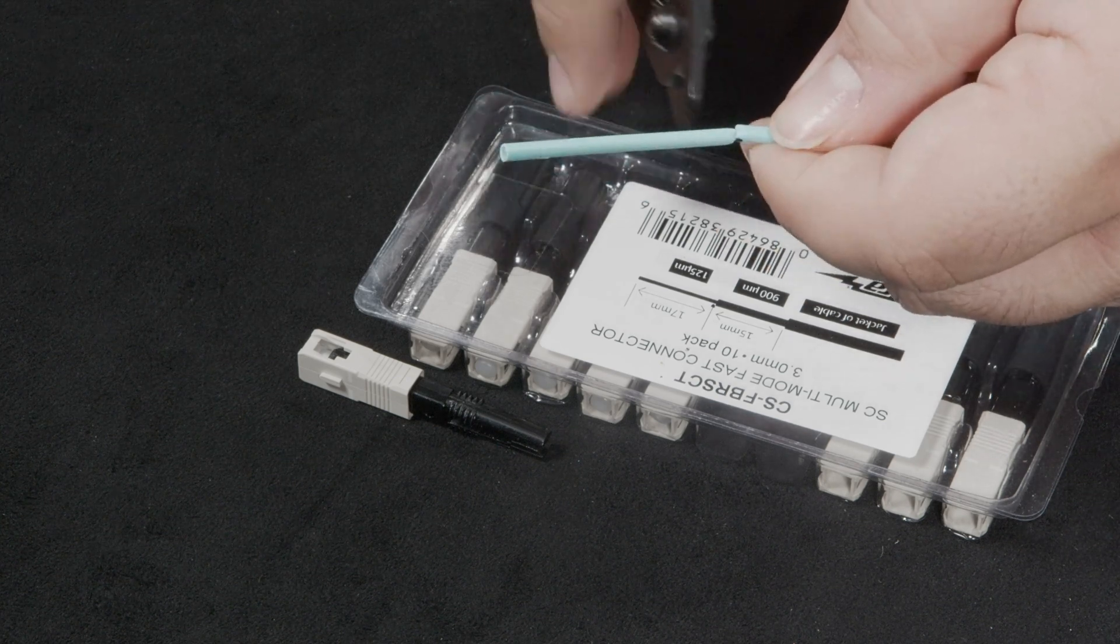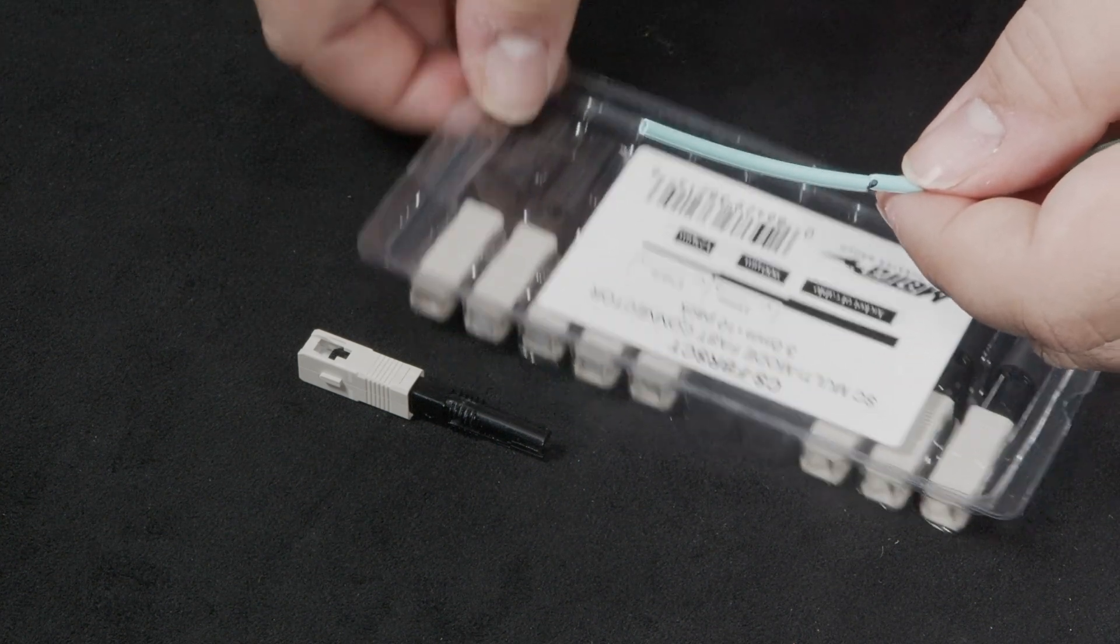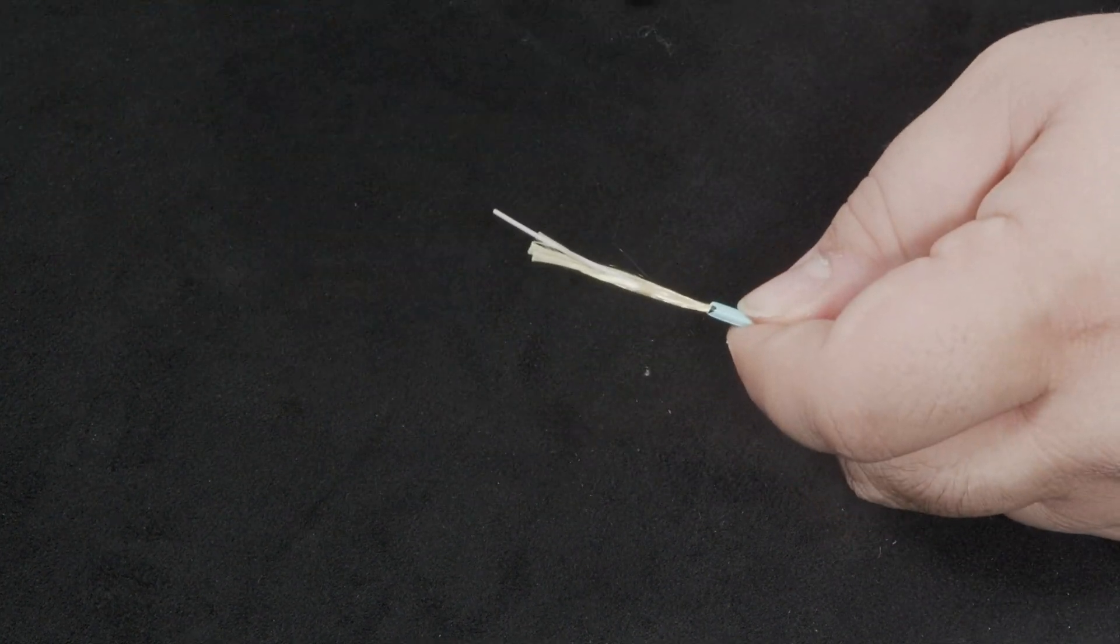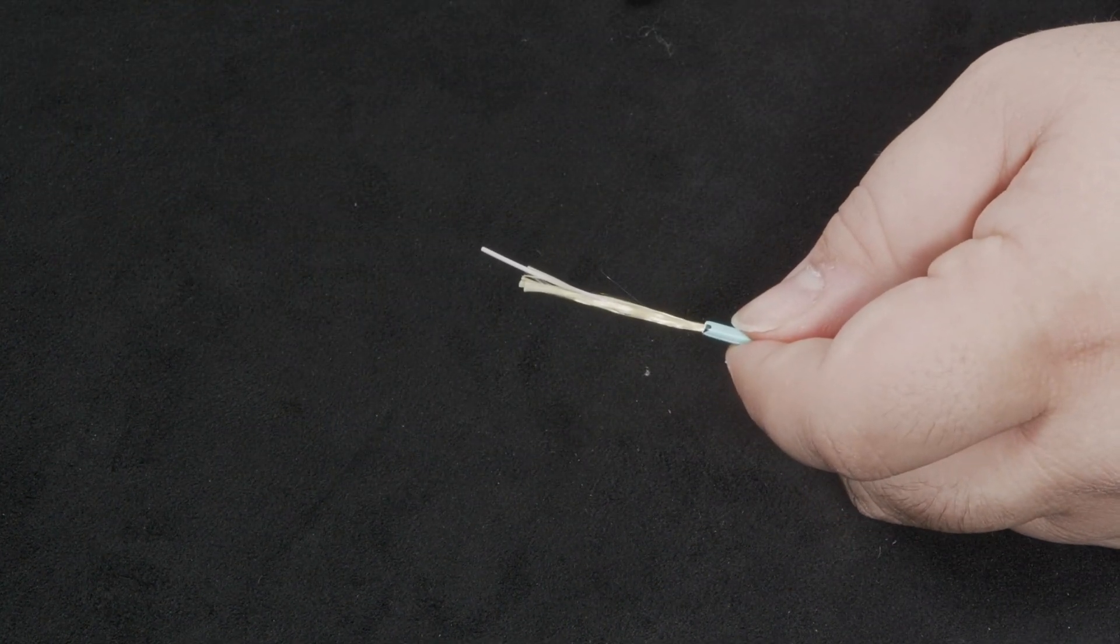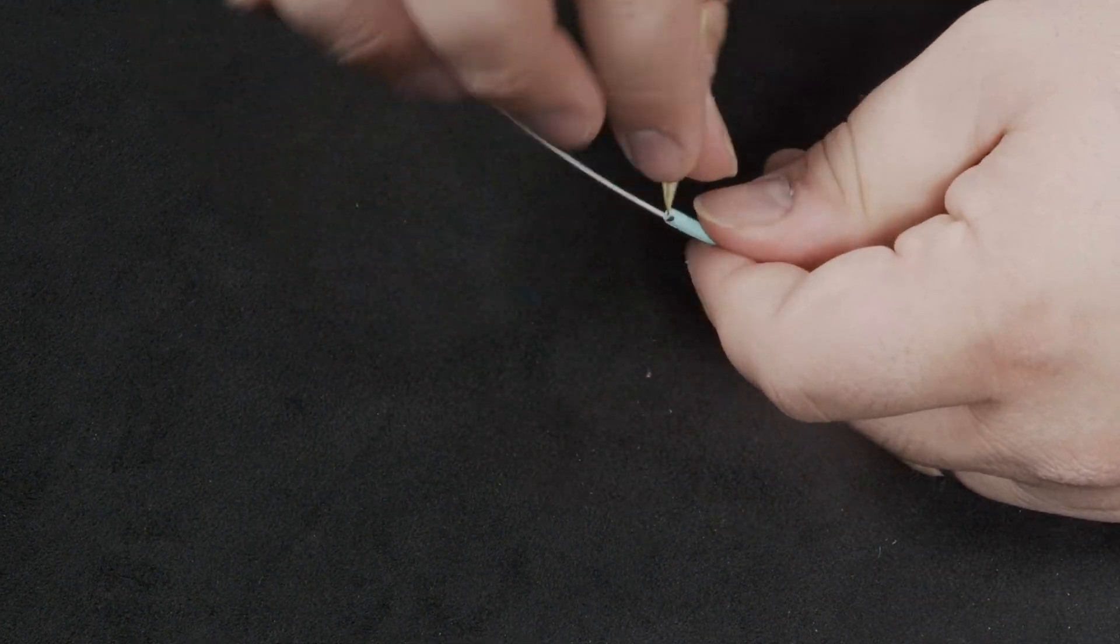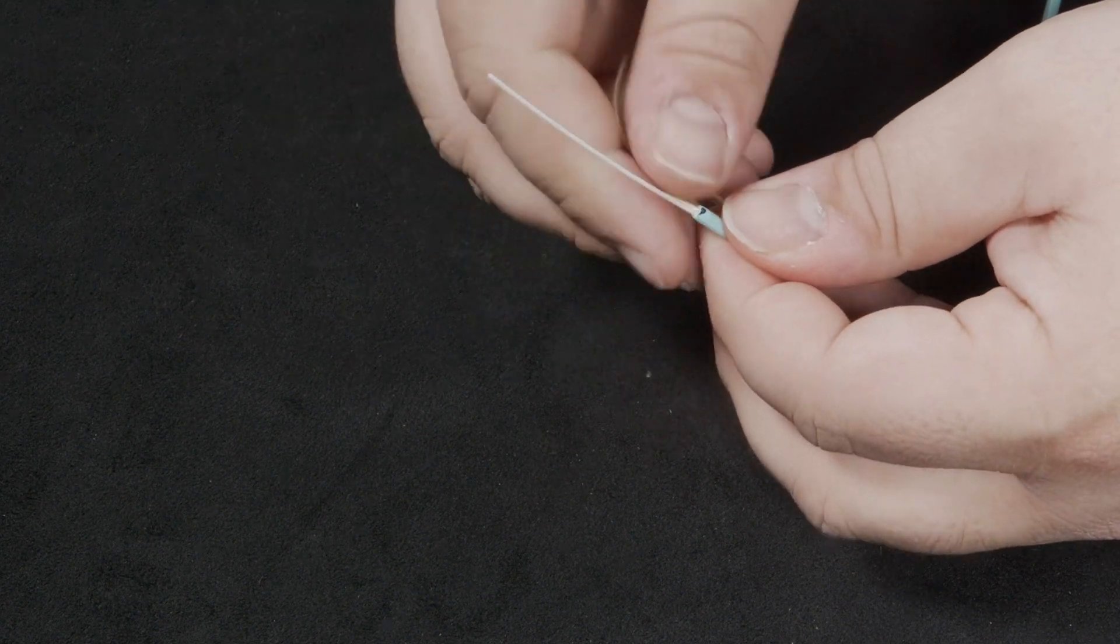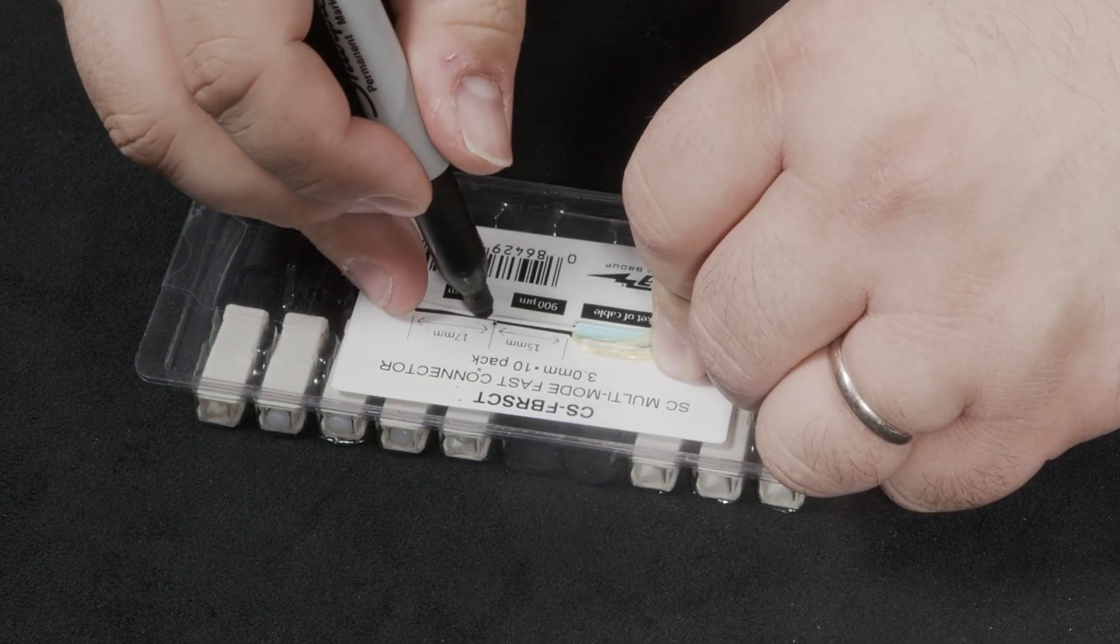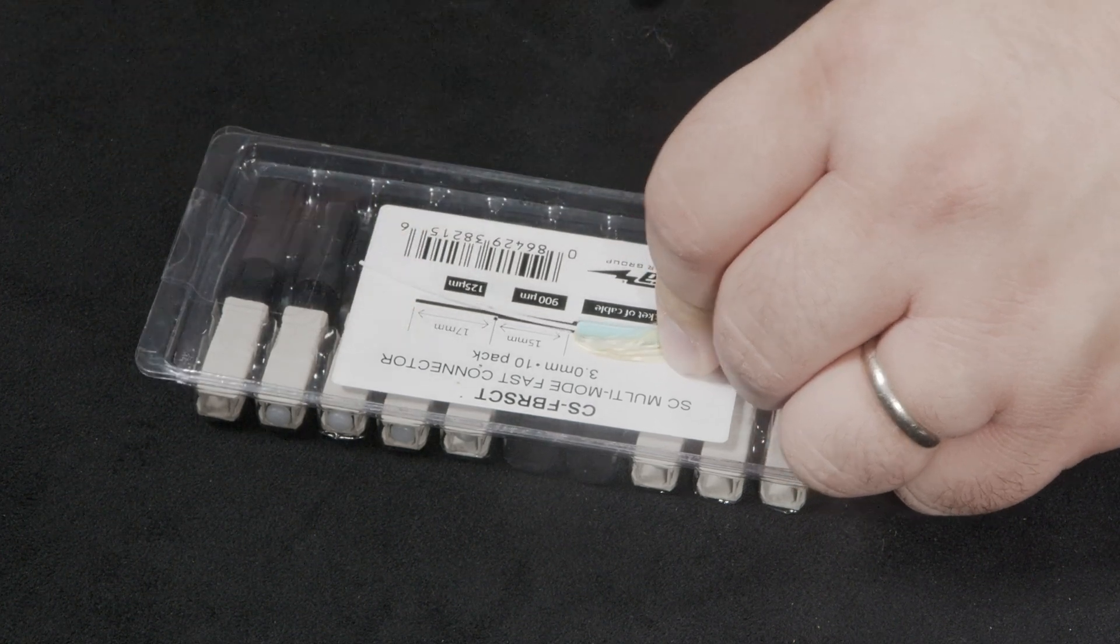Next, strip the outer jacket off of the fiber using the first opening on the fiber strippers. Move the Kevlar strands out of the way. Then, using the diagram again, mark where the inner shielding should be removed. In this case, 15 millimeters.